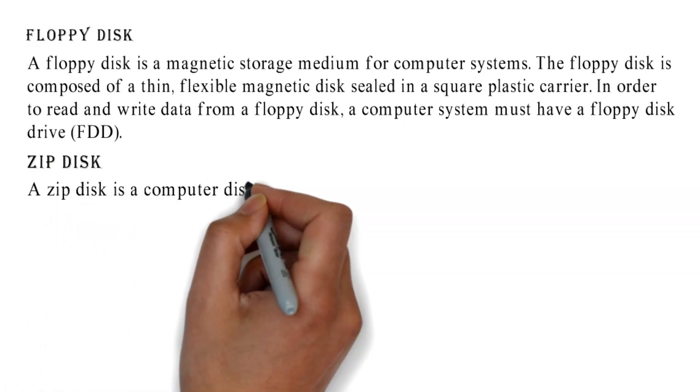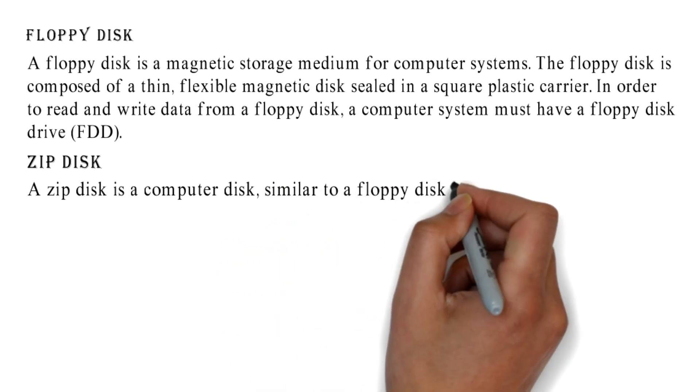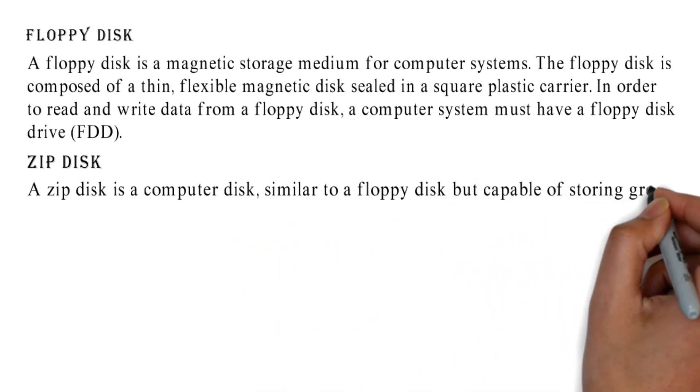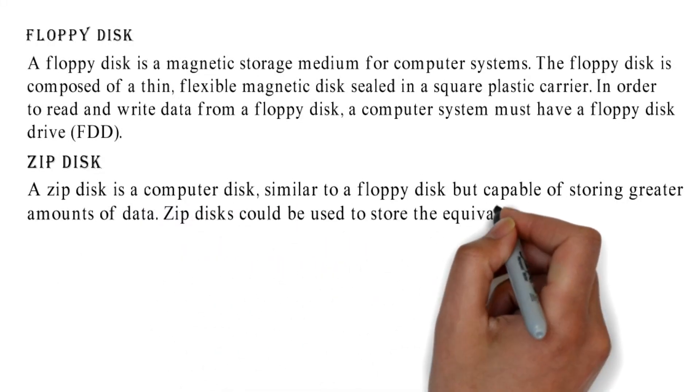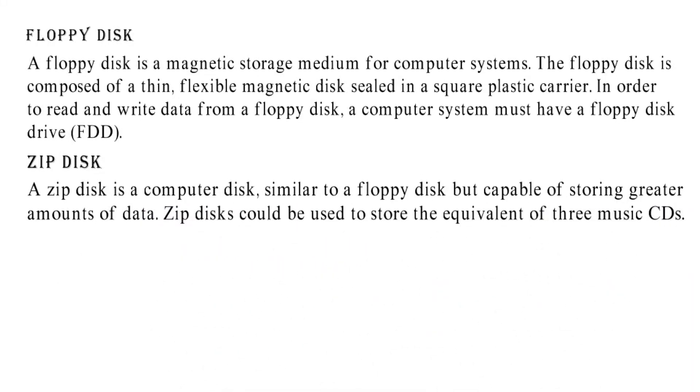A zip disk is a computer disk similar to a floppy disk but capable of storing greater amounts of data. Zip disks could be used to store the equivalent of three music CDs.